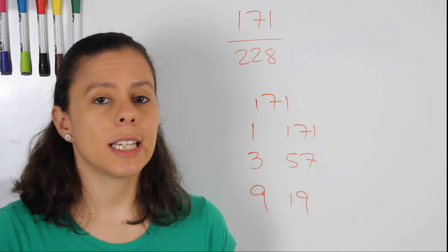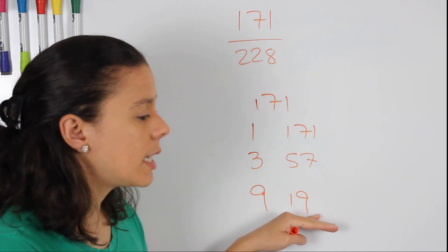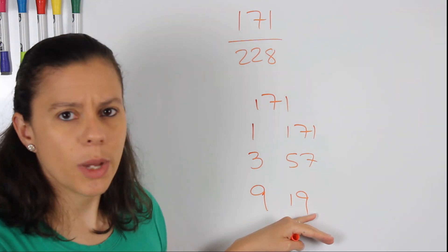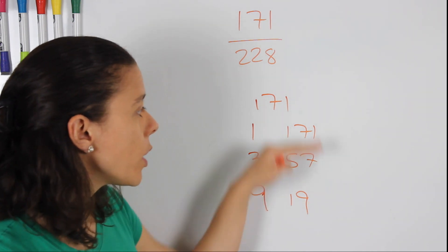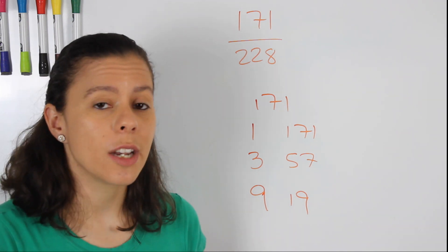We go to 17, also not a factor. And then we go to 19, which is a factor already, but we already found it. So we don't need to do anything else. We're done with that one.